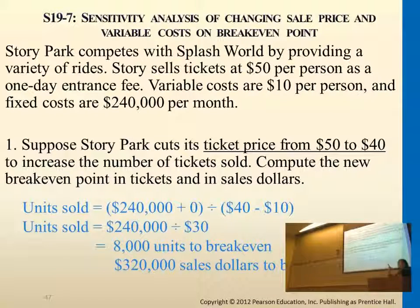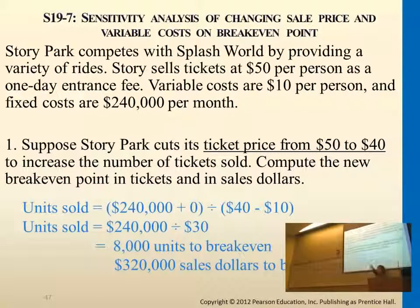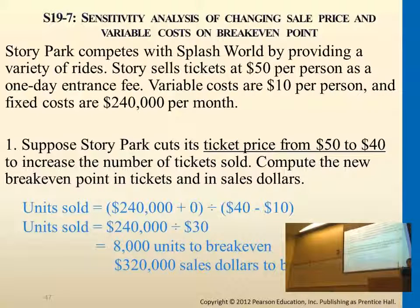If you think about this question — sales price originally is $50, now we decrease it to $40. So if we lower the sales price, the contribution margin originally was $40 and now it's only $30. Originally with $40 contribution margin, the break-even units was lower — we were getting only 6,000 units in order to break-even at the original price, using 240,000 divided by 40. But now since we lower the sales price, contribution margin per ticket is only $30, so you need to sell more tickets — 8,000 — in order to break-even.